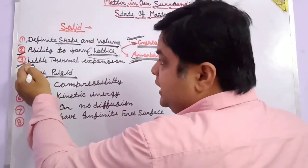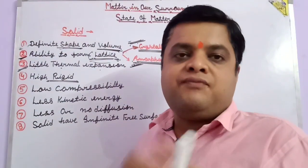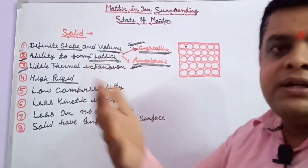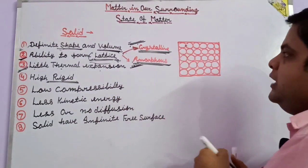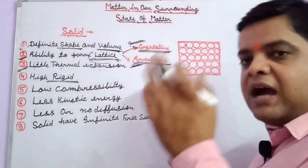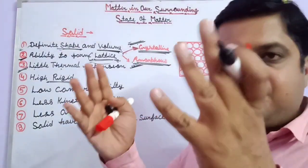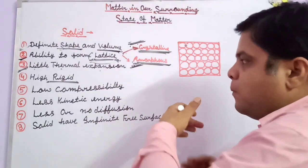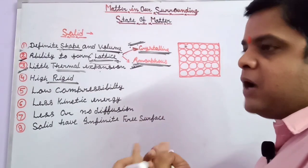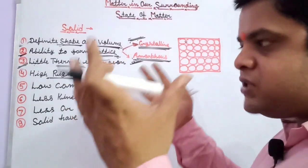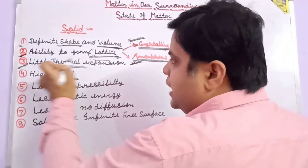Solids have a property called low thermal expansion. Solids have a high force of attraction and very less intermolecular space. Because the intermolecular force is very high and intermolecular space is very less, solids show very little thermal expansion when heat is provided, because the bonds are strong and the attraction force is high.